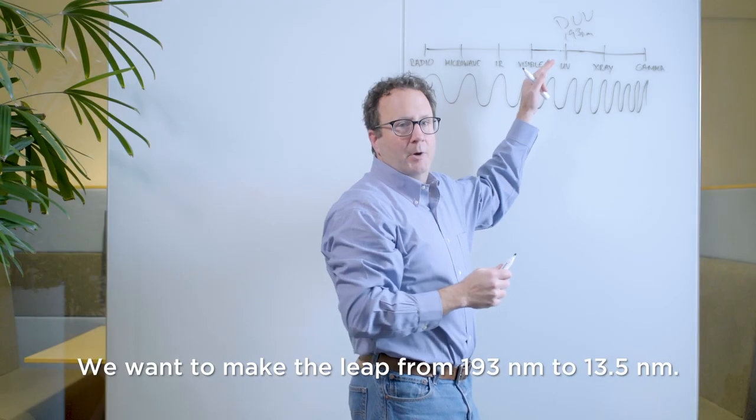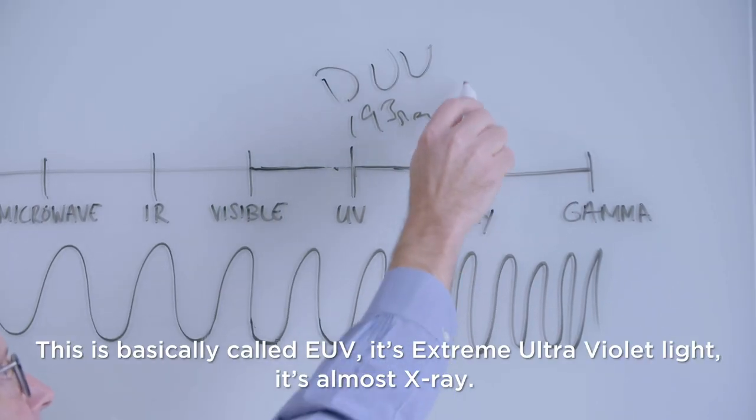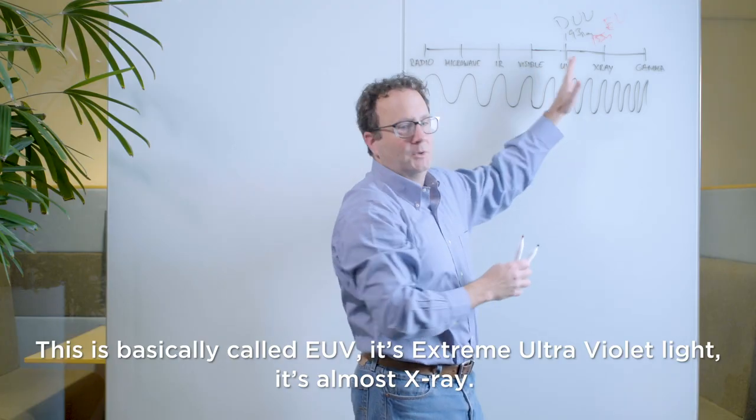Now we want to make the leap from 193 nanometers to 13.5 nanometers. This is basically called EUV—it's extreme ultraviolet light. It's almost x-ray.